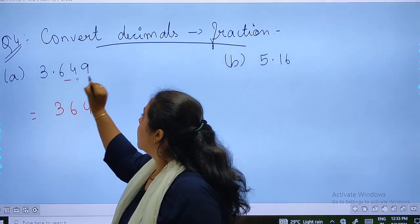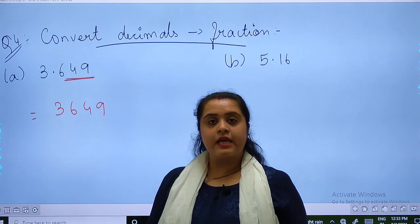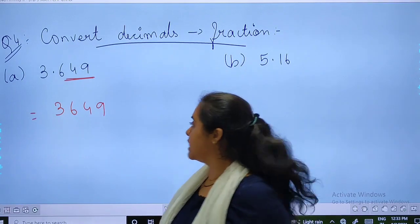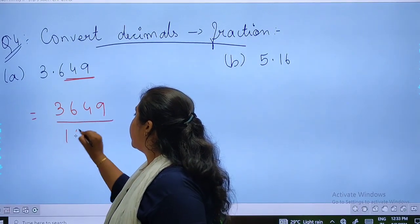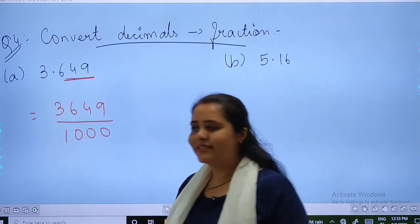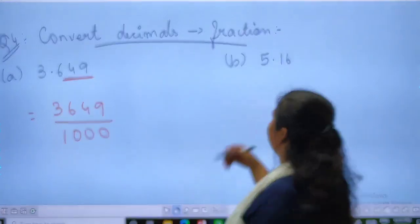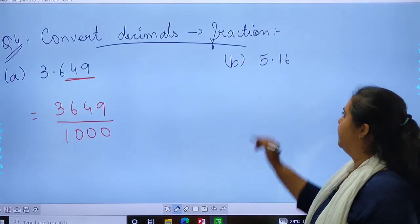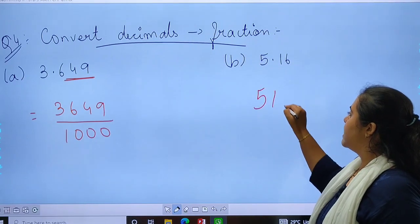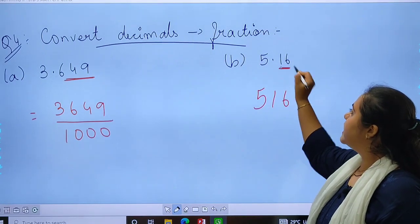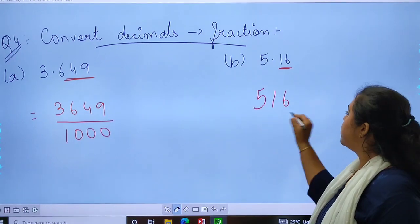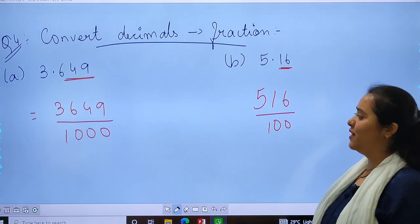So first of all, what we will do? We will just copy the digits. Then, how many decimal places are there? 3 decimal places are there, so it will be divided with 1000. Now part b: 5, 1, 6. How many decimal places are there? 2. So it will be divided with 100.